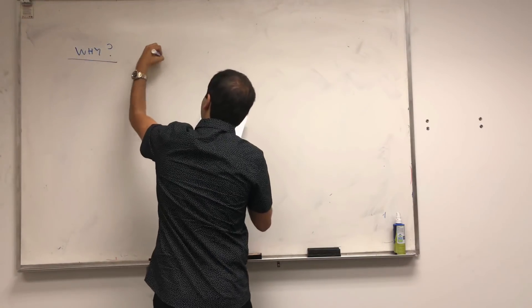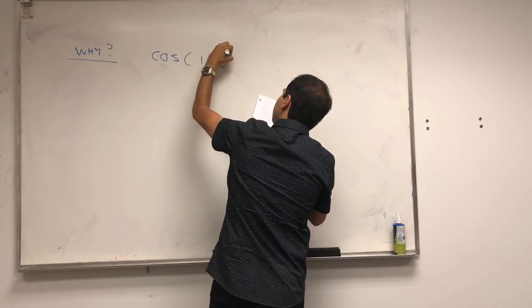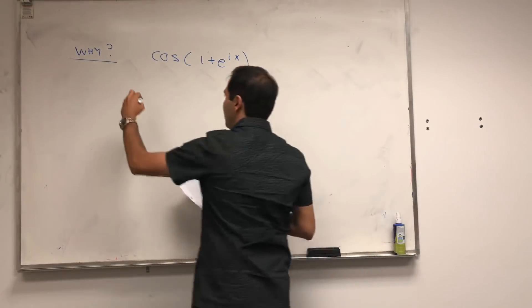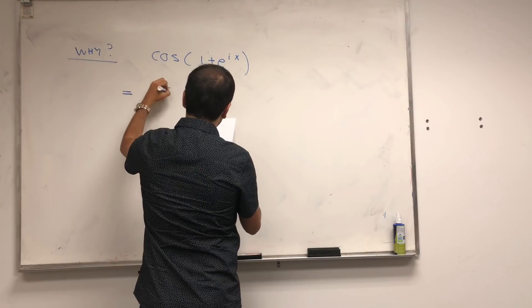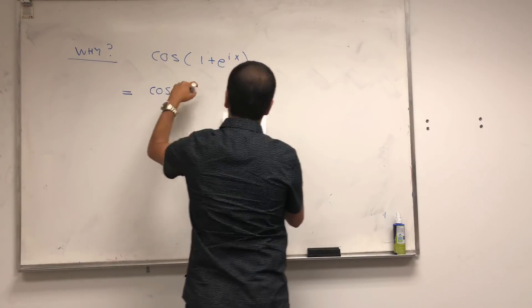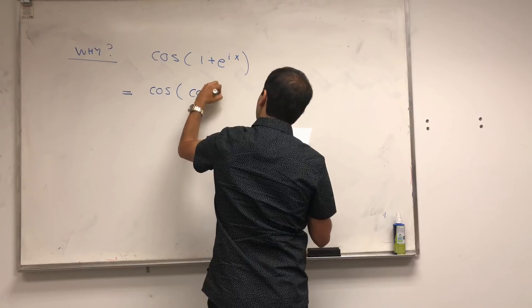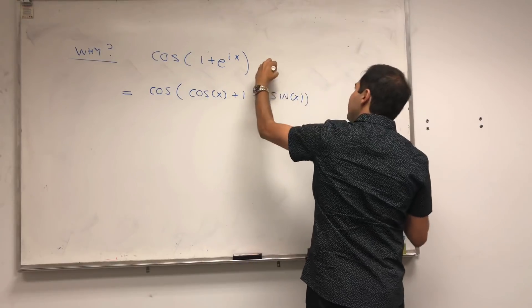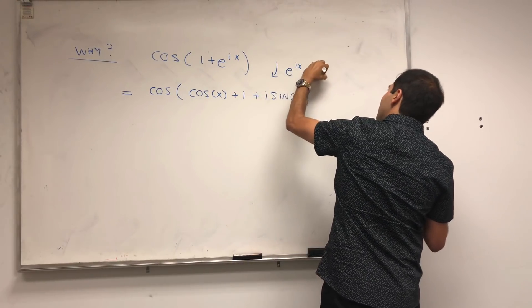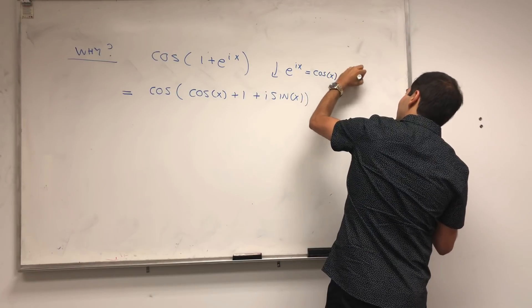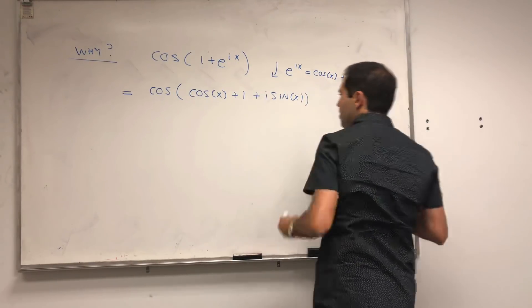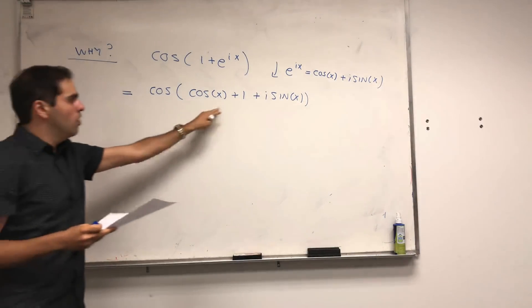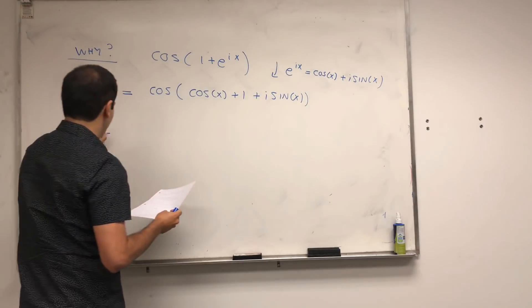Take this function, cosine of 1 plus e^(ix). Well, let's expand e^(ix) in terms of real and imaginary parts. So this becomes cosine of cosine of x plus 1 plus i sine of x, using the fact that e^(ix) is cosine of x plus i sine of x. And the nice thing is here you have a cosine of a sum.